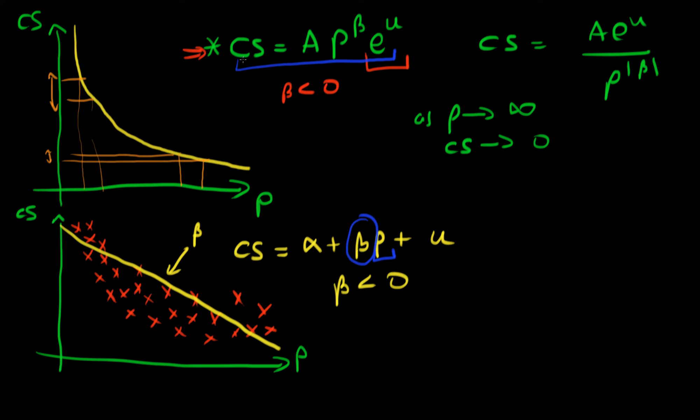Well the answer is if I just take the log of both sides of this population process I would get something which looks like log car sales being equal to log A plus β times log ρ plus u. And in this above derivation I've used the fact that log of two numbers multiplied together is log a plus log b, and also that log ρ to the β in this case is equal to β log ρ.